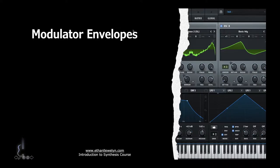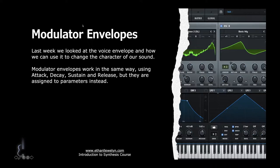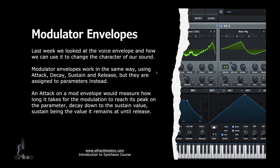Moving on, the next form of modulator is the envelope. Last week we looked at the voice envelope or amp envelope and how it changes the character of sound using attack, decay, sustain, and release. Modulator envelopes work the same way, however we are not changing the amplitude of the actual voice - we are simply using it to modulate parameters. An attack on a mod envelope measures how long it takes for the modulation to reach its peak on the parameter, then decay down to the sustain value, and so on.